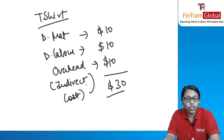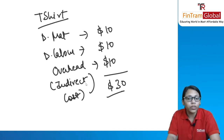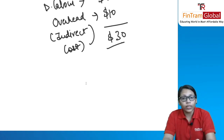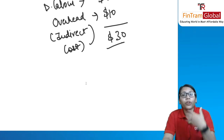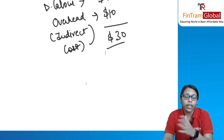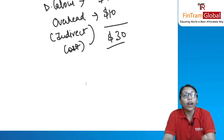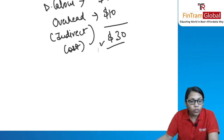The total cost comes out to $30. We will discuss direct material, direct labor, and overhead in detail in later sessions. The different components of cost — material, labor, and indirect expenses — come out to $30. This $30 is the value of resources you put together to produce this t-shirt: the material, labor, electricity, and other expenses.